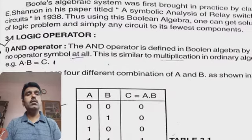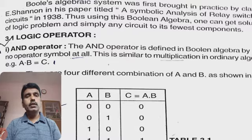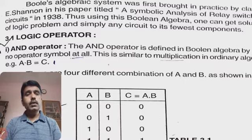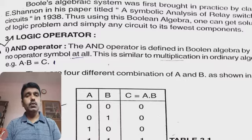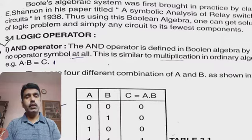For Boolean algebra calculations, there are basically three operators used, which are the same as those already used in logic gate circuitry. The first is the AND operator, which works just like multiplication. The AND operator is noted with a dot, and is equivalent to multiplication.